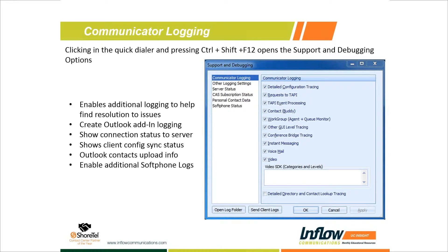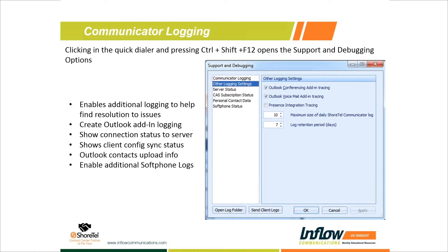The other log settings are usually all turned off. Outlook logging is one option — we have a lot of Outlook-related issues because there are so many different plugins for Outlook. Sometimes we need to turn on these additional traces to see what's going on with the conferencing or voicemail plugins inside Outlook. This turns on additional logging to help figure out which plugins aren't working or if there's a conflict.